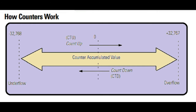How counters work. The figure demonstrates how a counter works. The count value must remain in the range of minus 32,768 to plus 32,767. If the count value goes above plus 32,767 or below minus 32,768, the counter status overflow (OV) or underflow (UN) bit is set. A counter can be reset to zero using the reset instruction.